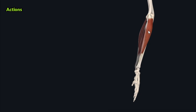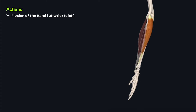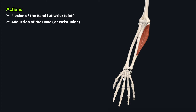The flexor carpi ulnaris muscle acts through its tendon of insertion on the pisiform bone and the base of the fifth metacarpal bone to perform two main functions: flexion of the hand at the wrist or radiocarpal joint, and adduction of the hand at the wrist joint.